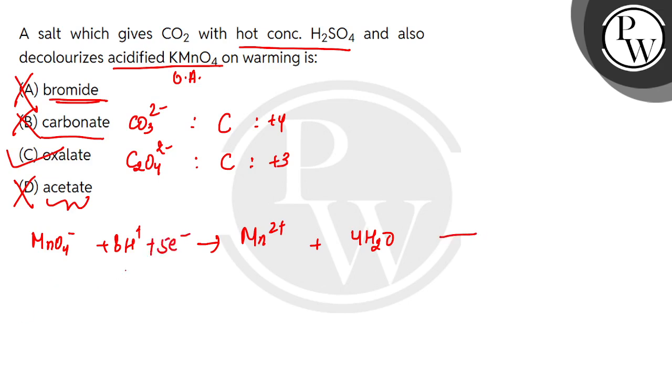Now what is C2O4^2-? What will happen with C2O4^2-? It will convert into carbon dioxide on reaction with acidified potassium permanganate. We will balance it.